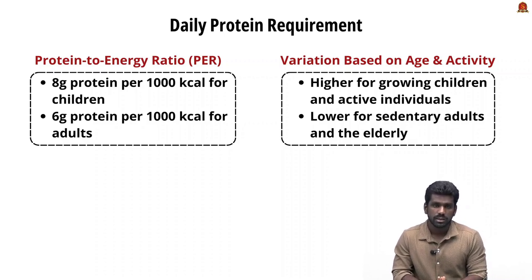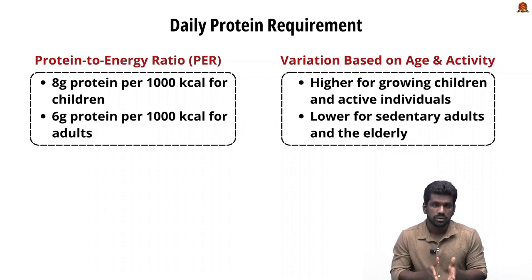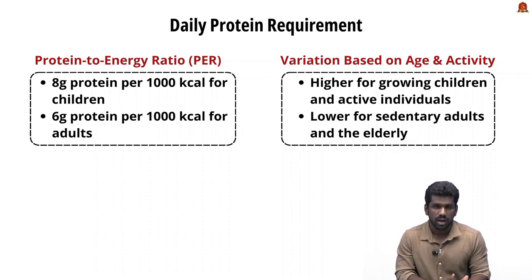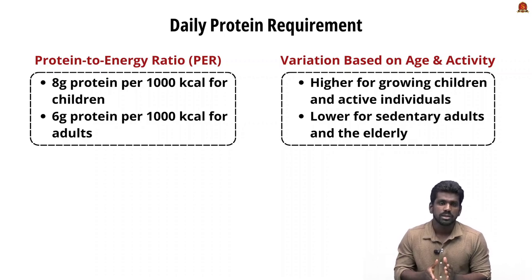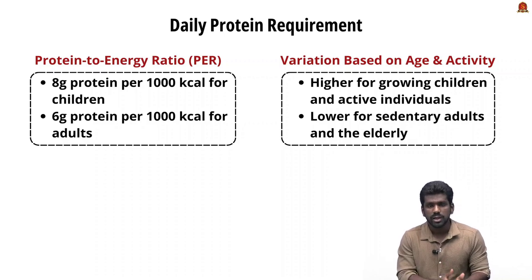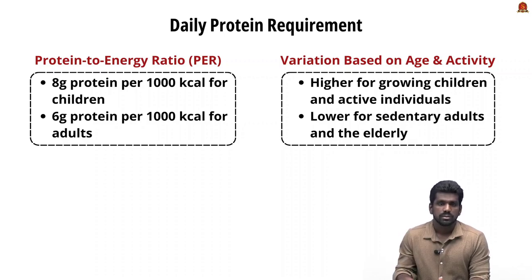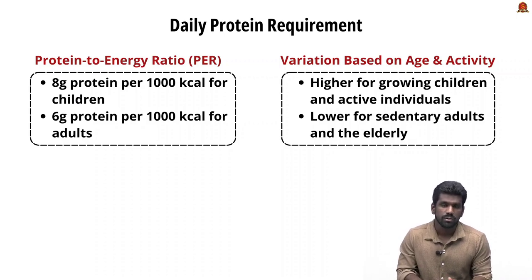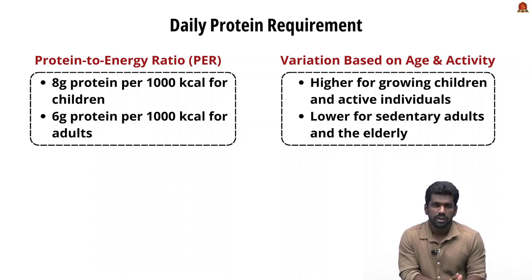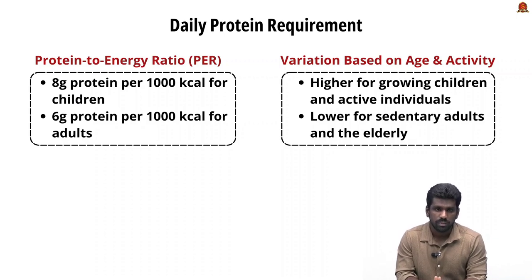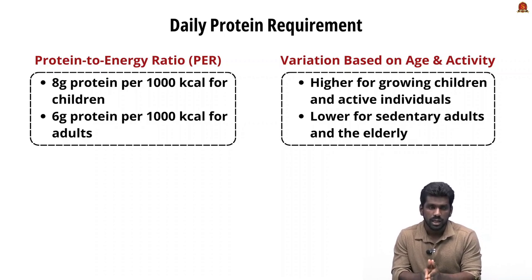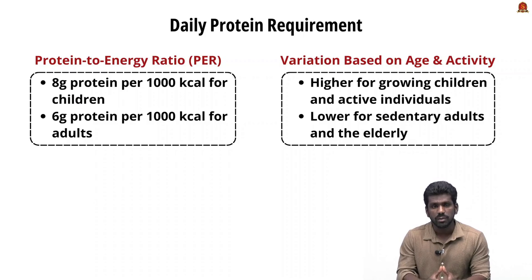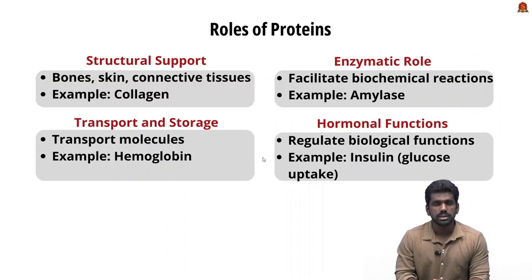The body does not store protein as it does with fat and sugar — proteins are not stored the way fats and sugars are. The protein-to-energy ratio requirement shifts with age: it remains high in growing children and reduces in sedentary adults. Active people have higher protein needs and energy intake compared to inactive people.